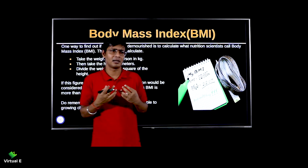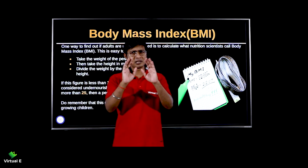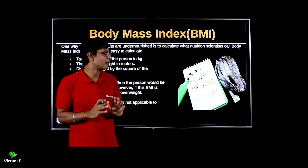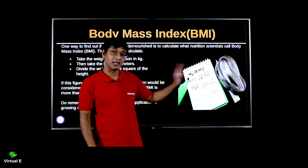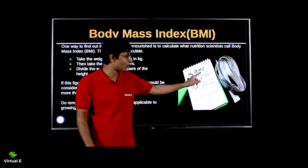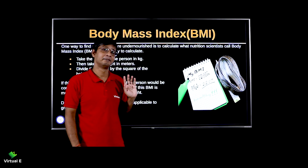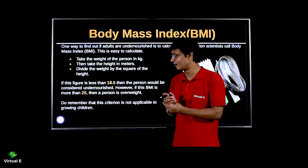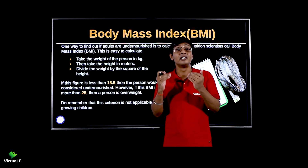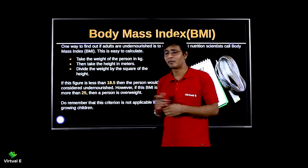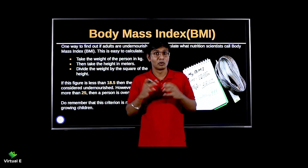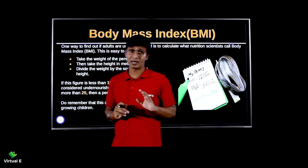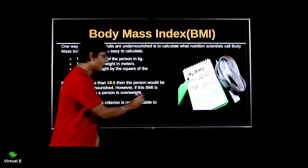We can judge your health by checking body mass index — BMI. The formula: take your weight in kg and divide by the square of your height. If the figure is less than 18.5, you are malnourished or undernourished. If it is above 25, you are obese. This is BMI — it comes for three marks and is one of the easiest topics in this chapter.